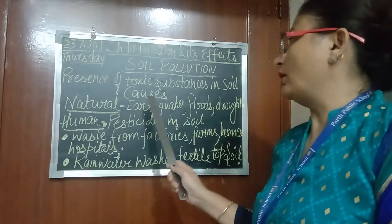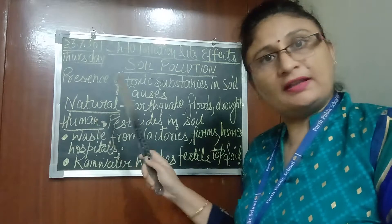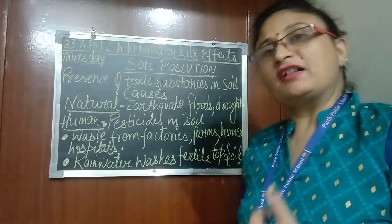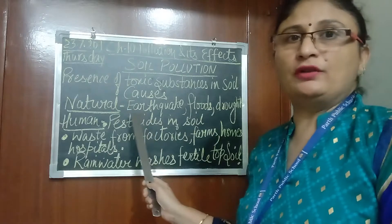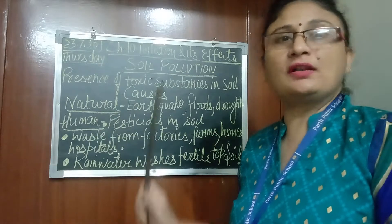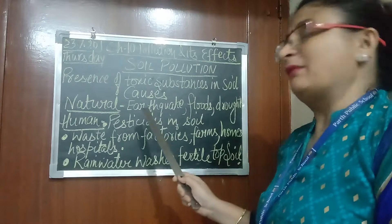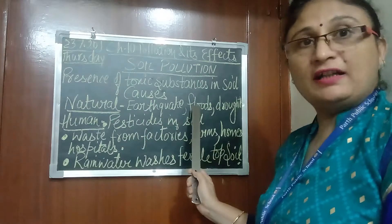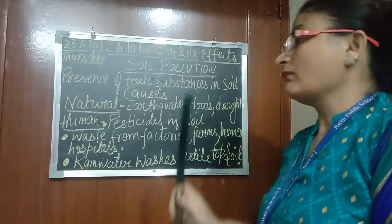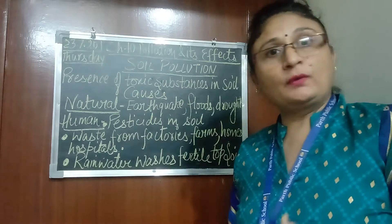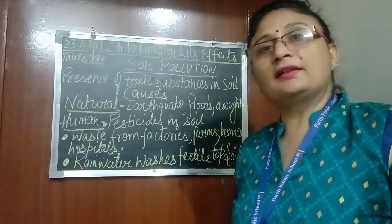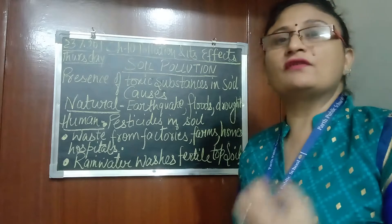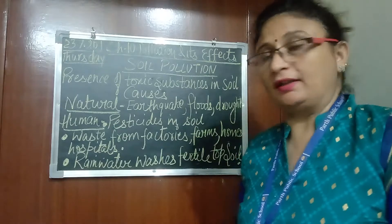It can be caused due to natural reasons or due to human activities. First we will study how soil is polluted by natural means. It can be polluted by earthquakes, floods, and drought. When an earthquake comes, so many cracks occur on the earth, due to which the soil is polluted.